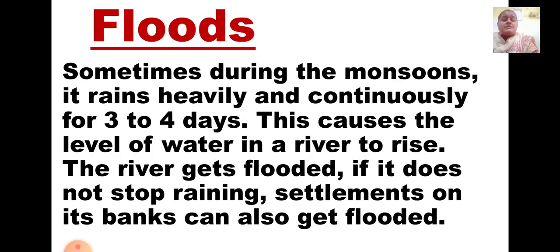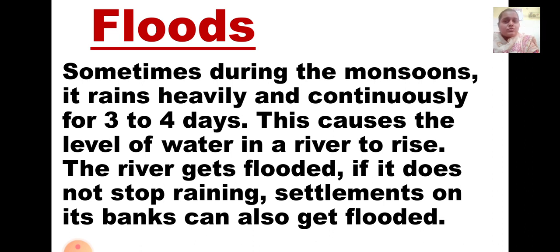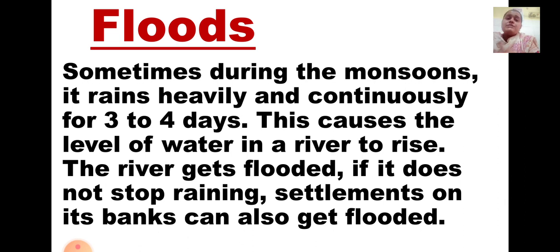The second natural disaster is floods. Sometimes during the monsoons it rains heavily and continuously for three to four days. This causes the level of water in a river to rise and the river gets flooded. If it does not stop raining, settlements on its banks can also get flooded — especially in low-lying areas, villages and houses nearby to the river also get flooded.